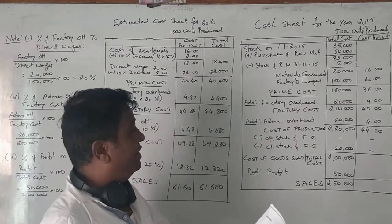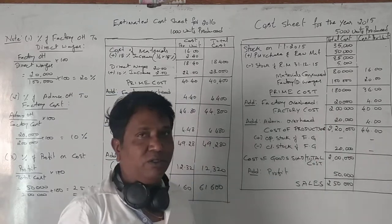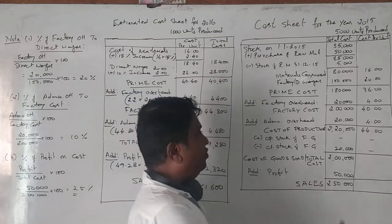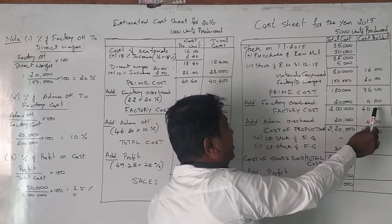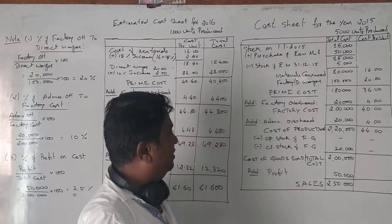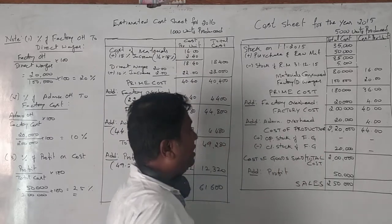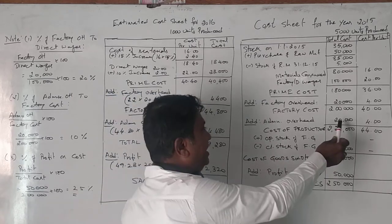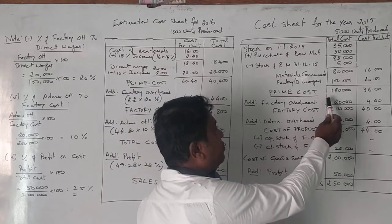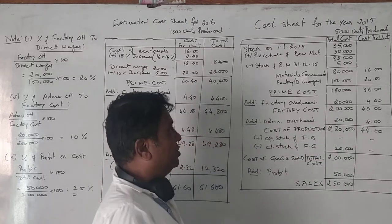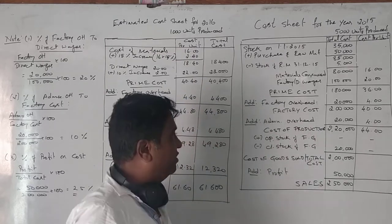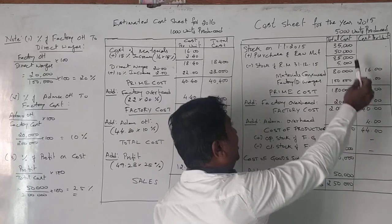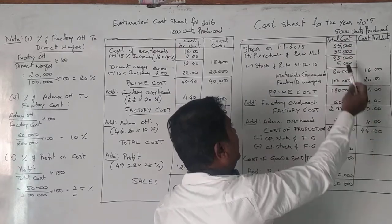Factory overhead is given as 20,000 rupees. Adding 20,000 to prime cost of 1,80,000 gives a factory cost of 2,00,000 rupees. Per unit factory overhead is 20,000 divided by 5,000 equals 4 rupees per unit. Adding administration overhead of 20,000 gives a total cost of production of 2,20,000, and 2,20,000 divided by 5,000 gives the per unit figure.